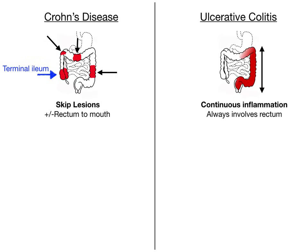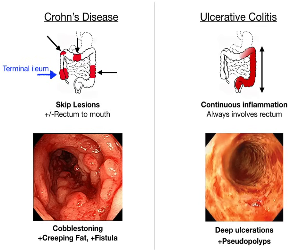On colonoscopy, in Crohn's disease you see cobblestoning. The cobblestoning develops as a result of skip lesions — because inflammation is skipping throughout the colon, you get gross changes that alternate. As a result, the colon takes on a cobblestoning appearance with alternating levels of what's called creeping fat. This is because there are different stages of healing going on simultaneously; certain areas of the bowel are raised up and have more fat changes. That is why you see cobblestoning and creeping fat.